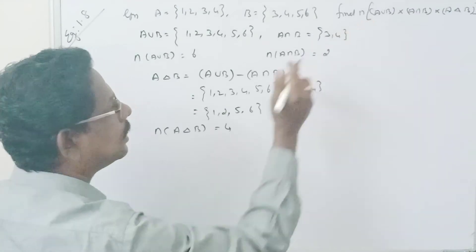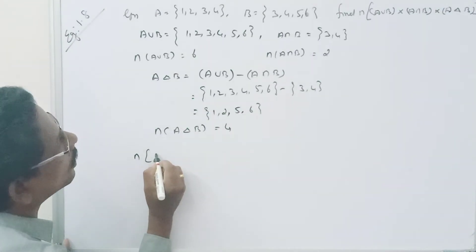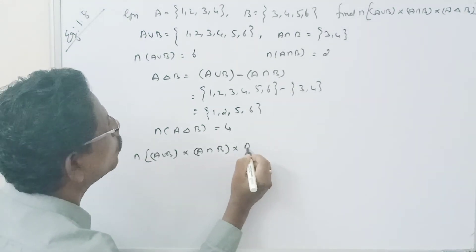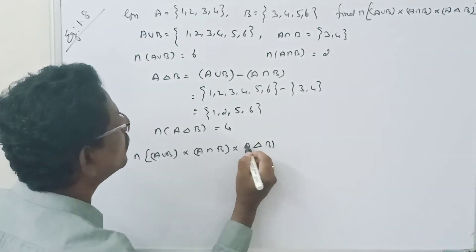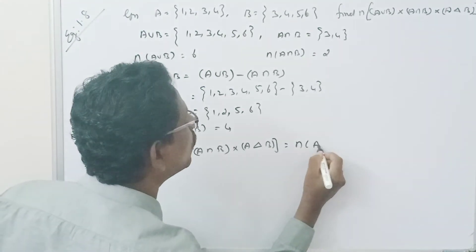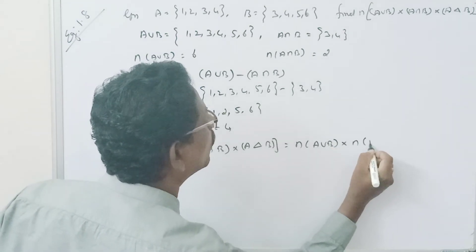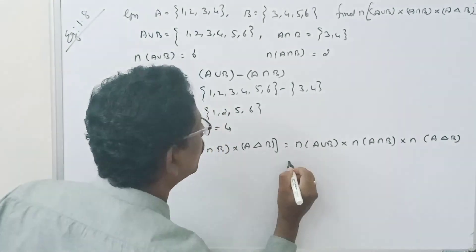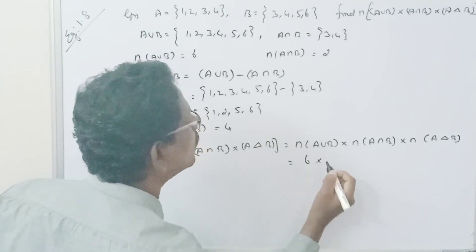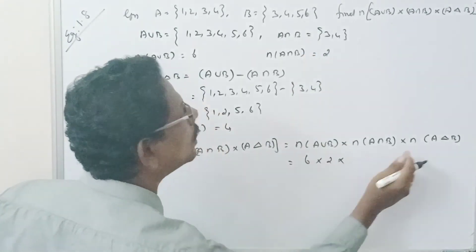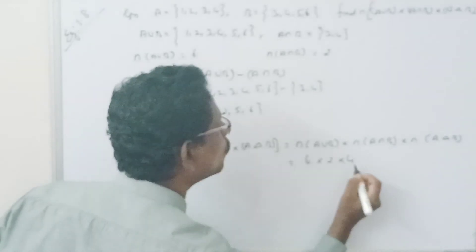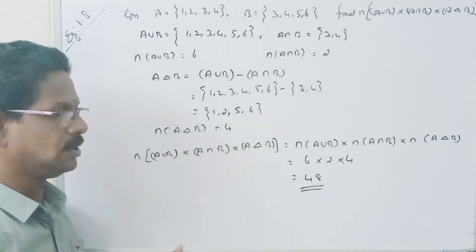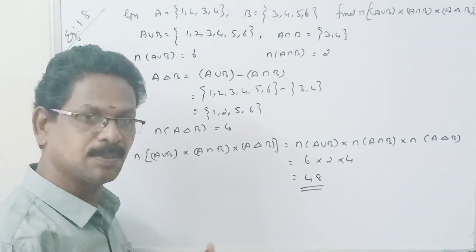Now for the final answer: the number of A union B multiplied by the number of A intersection B multiplied by the number of A symmetric difference B equals 6 times 2 times 4, which is equal to 48.